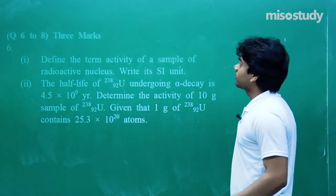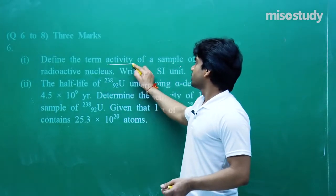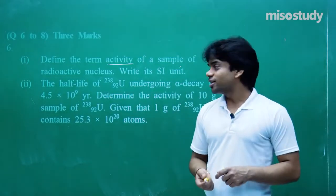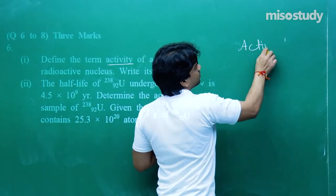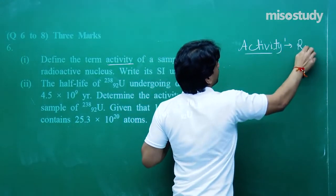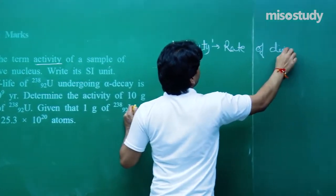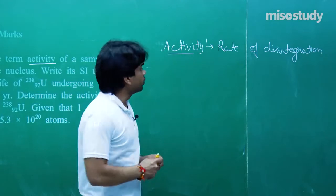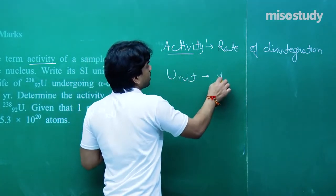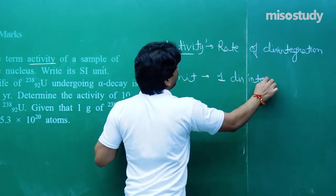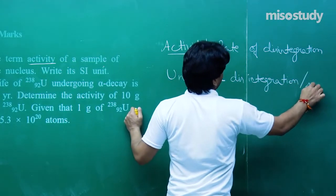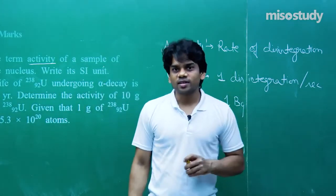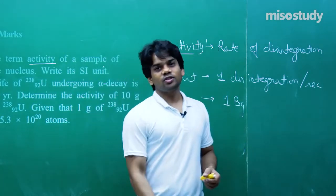Question number 6 is a 3-marks question: define the term activity of a sample of a radioactive nucleus and write its SI unit. Activity is the rate of disintegration. The unit is one disintegration per second, which is called one becquerel (Bq). One becquerel equals one disintegration per second — that is the unit used to express the activity of any sample.